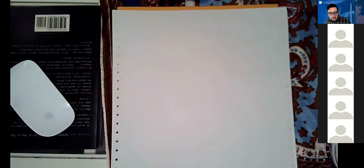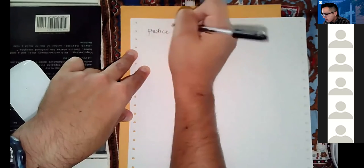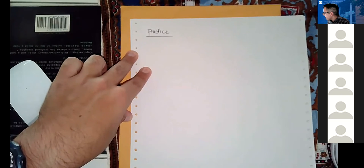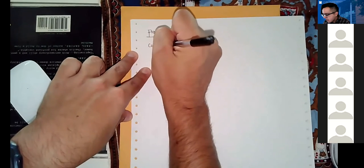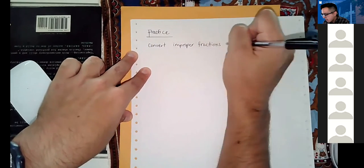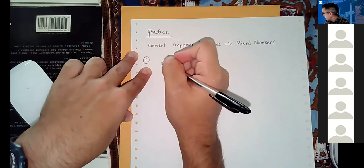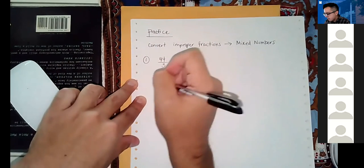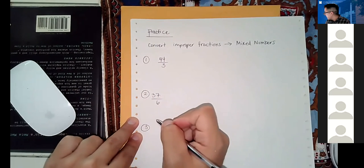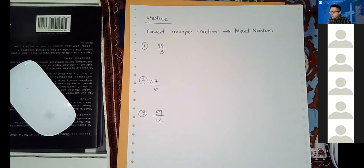Let's practice this. In the interest of time I won't throw you into breakout rooms, but let me write down a few problems for you: convert these improper fractions to mixed numbers. I'll give you about five minutes to do that.